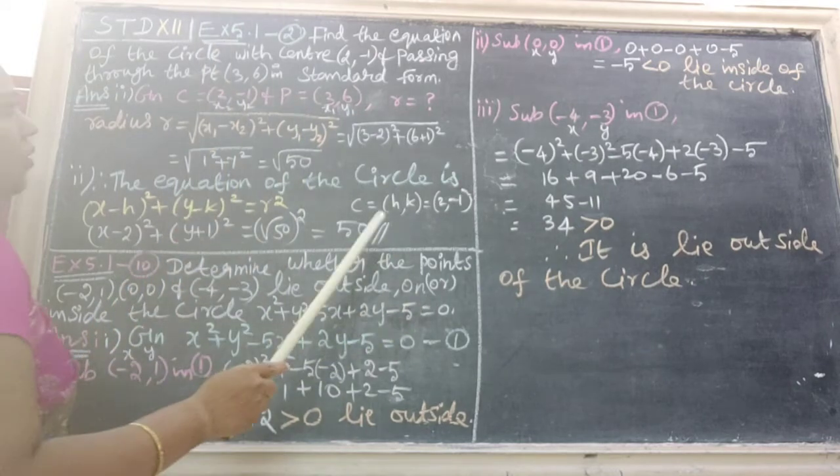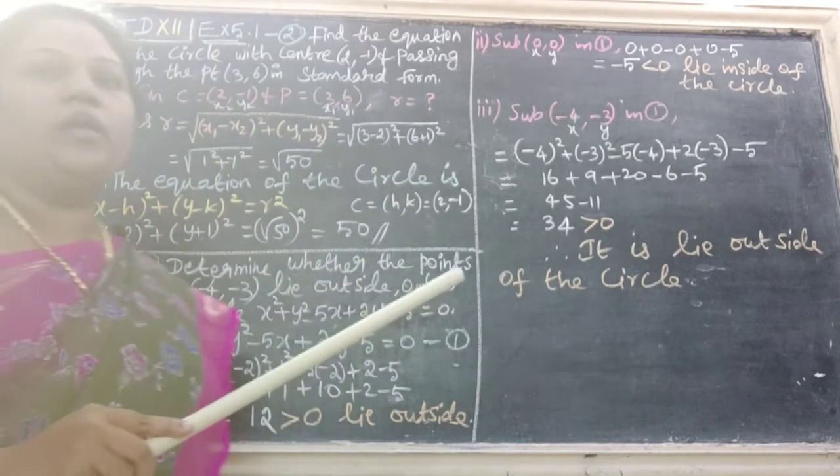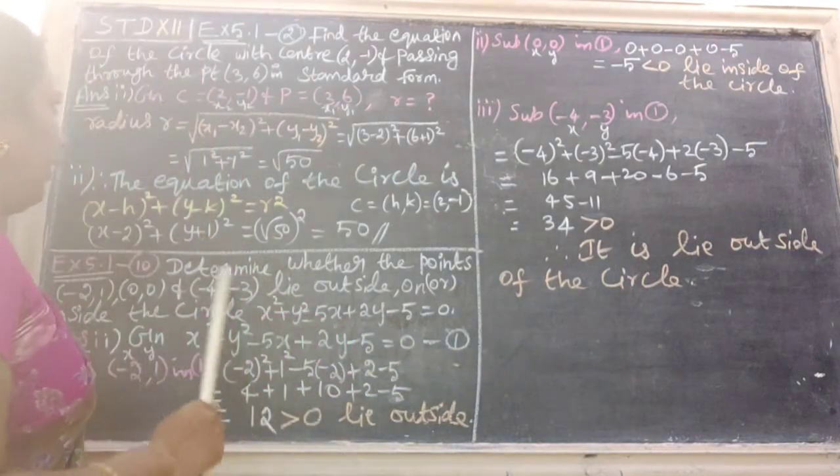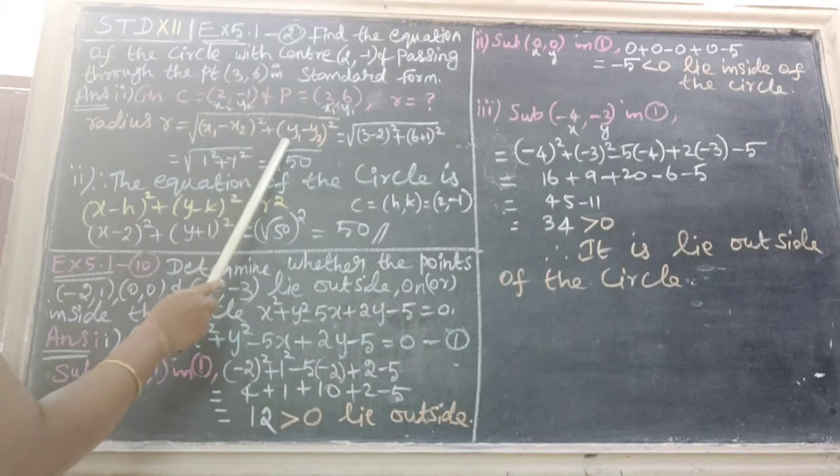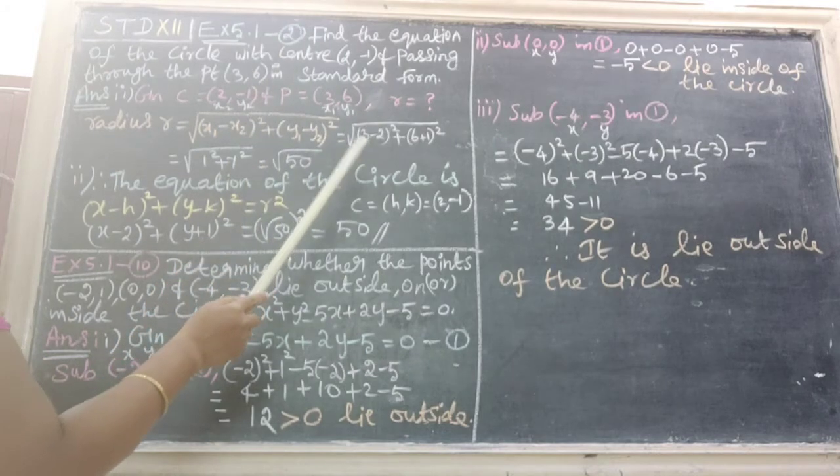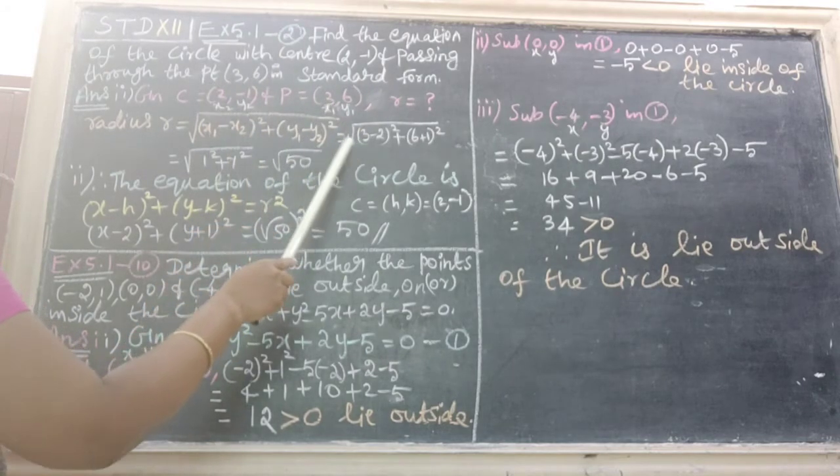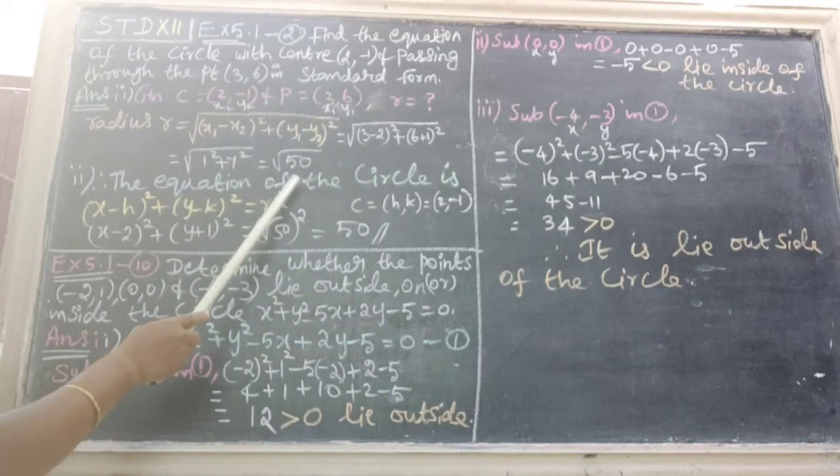Therefore, to find the value of radius r, r equals the square root of x1 minus x2 whole square plus y1 minus y2 whole square. Put the values in the formula and simplify. We get root 50.